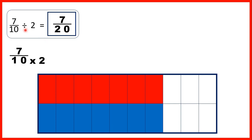Also notice dividing by 2 is the same as finding a half, but it's also the same as multiplying by a half. So if we had 7 tenths times 1 half, we would do the same thing and get the same answer.